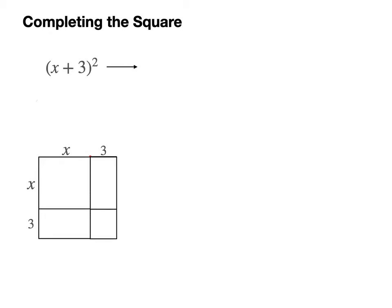This box is x by x, so its area is x squared. Here's a rectangle that's 3 by x, so its area is 3x. And here's another identical one, so that makes 6x in all. And finally this corner square, it's 3 by 3, so the area is 9. So that confirms that the square of x plus 3 is x squared plus 6x plus 9.